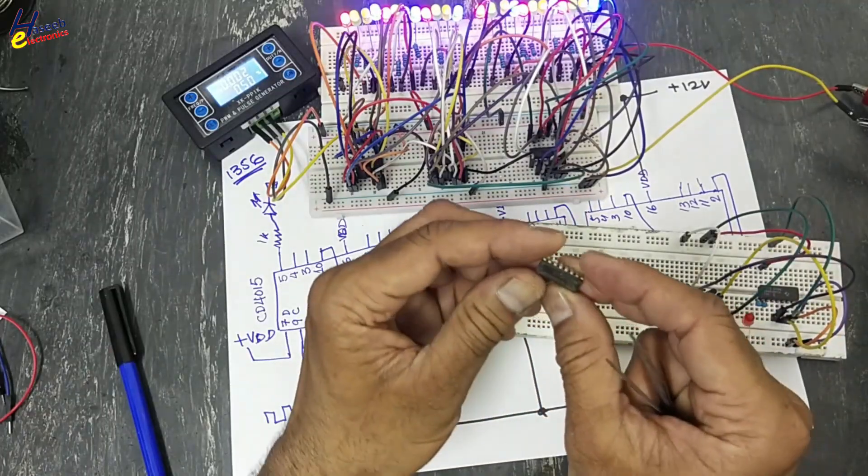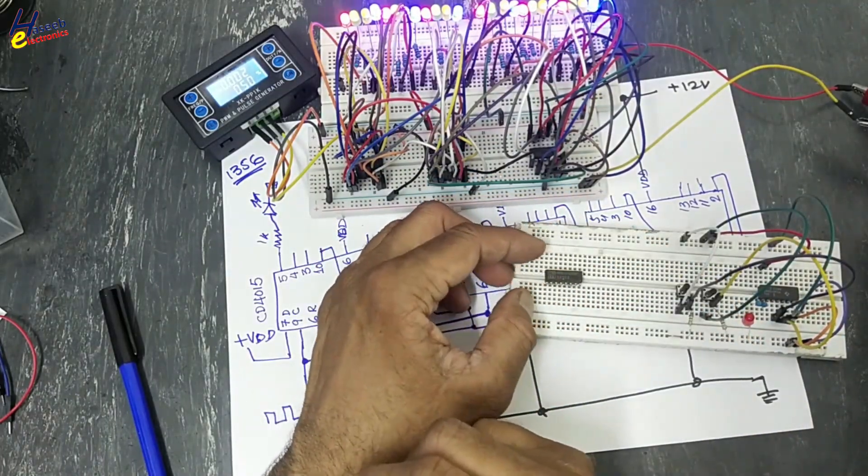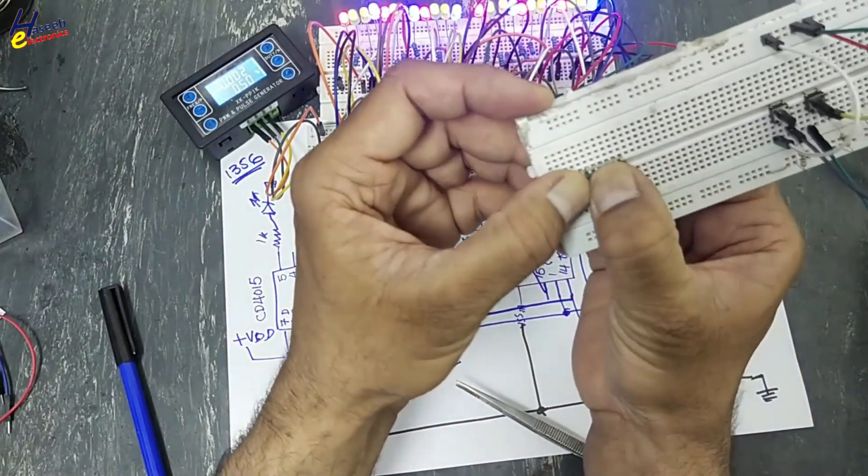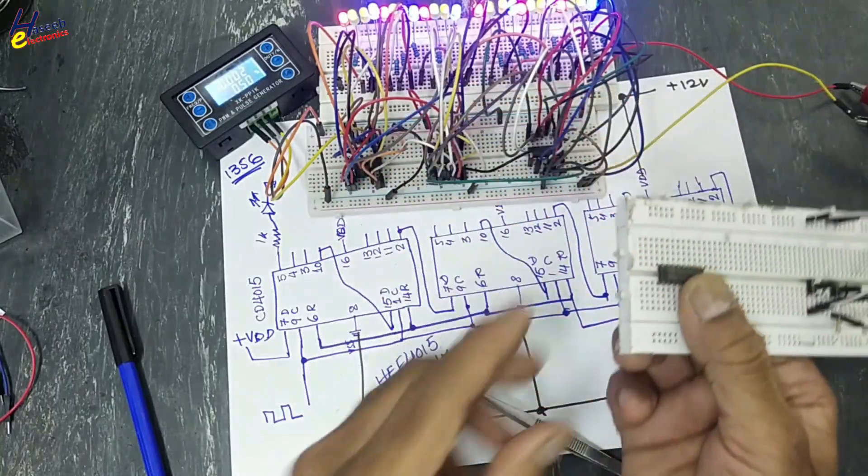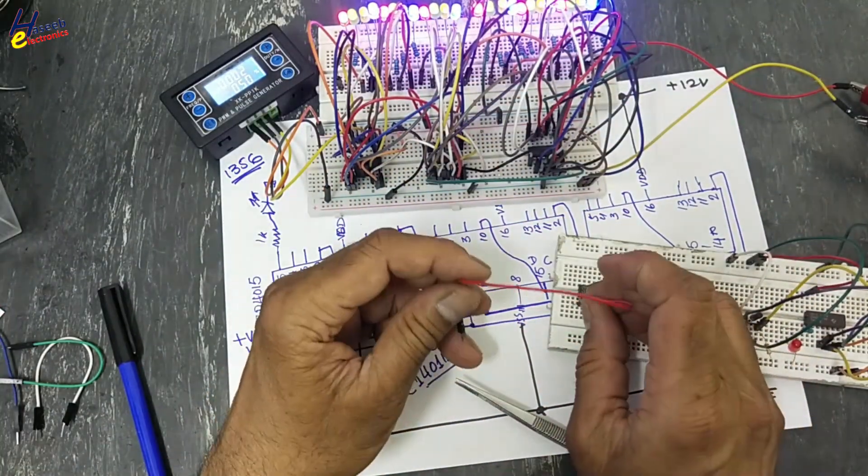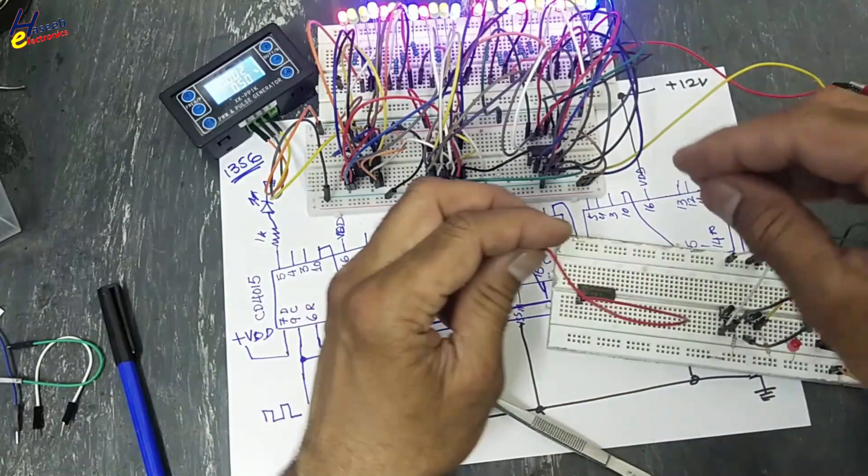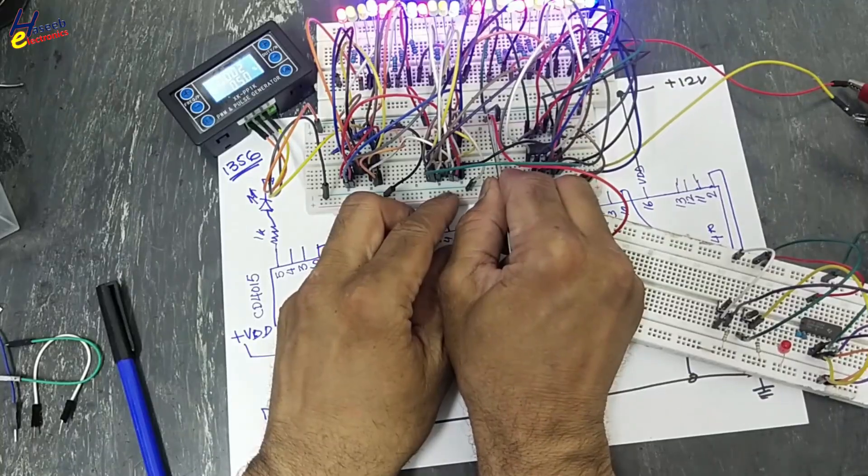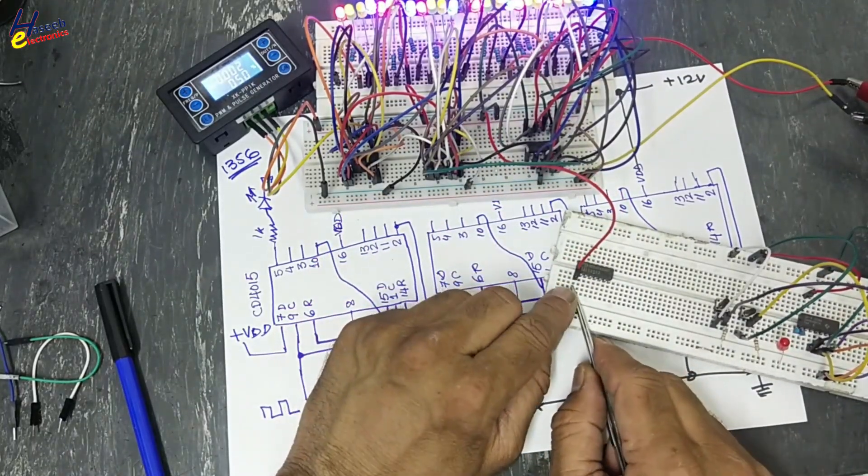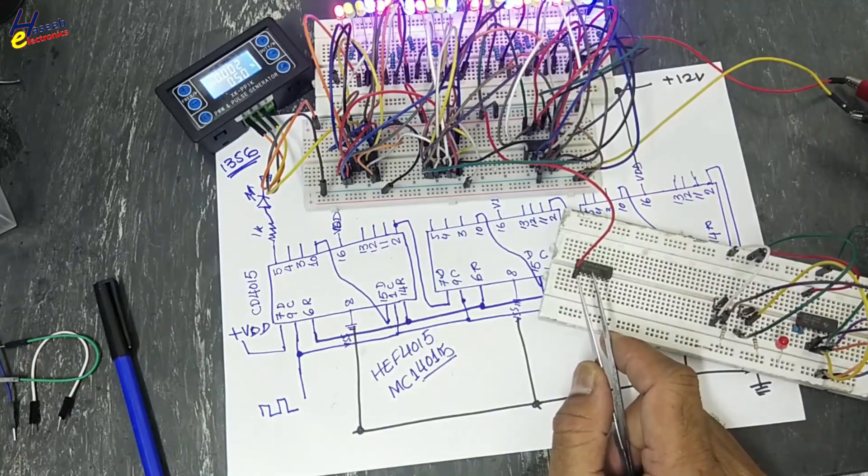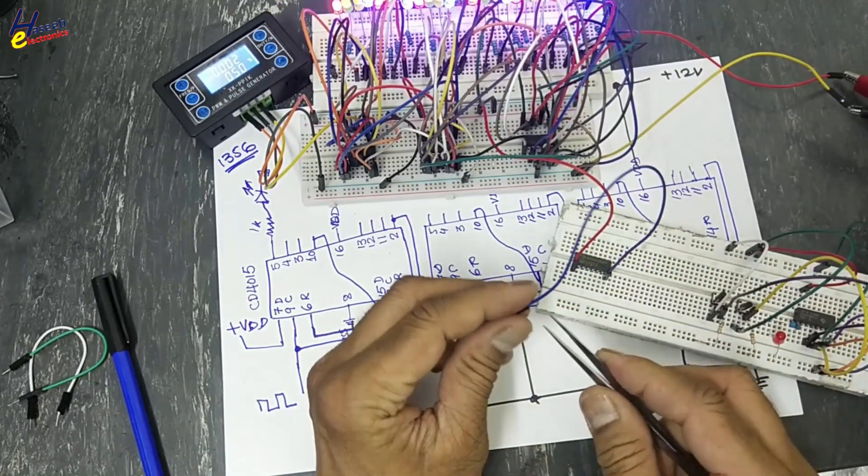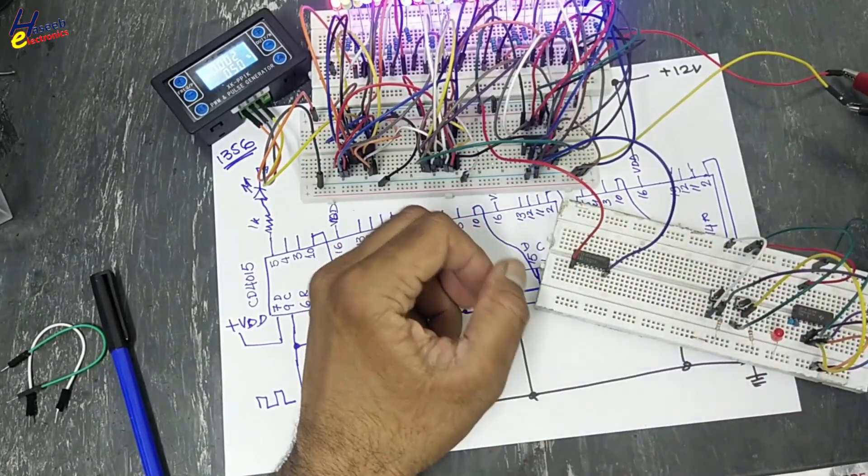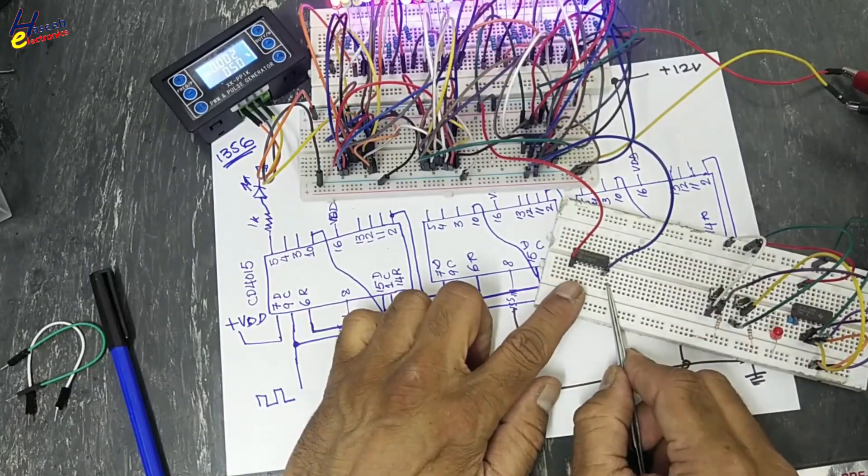I will use CD4049 IC. That is inverter. CD4049 IC. Its pin number 1 is VDD. Supply pin positive. I will connect 12V positive to pin number 1. In this IC, pin number 1 is positive voltage. We will connect pin number 8 to return.